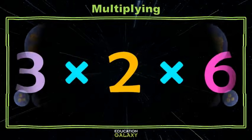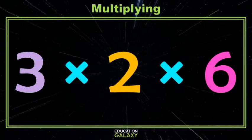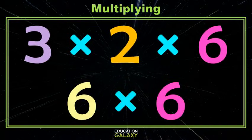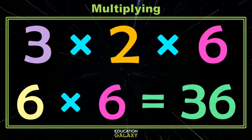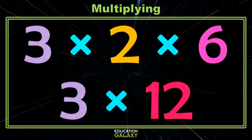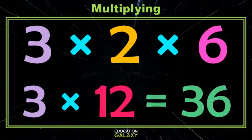We also learned that if multiplication is our only operation, it doesn't matter what order we do it. For instance, in this example, we can multiply 3 times 2 first and we'll end up with 36. And if we multiply 2 times 6 first, we still end up with 36. Amazing!